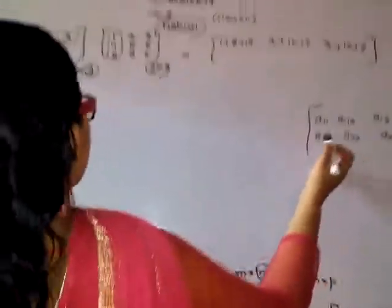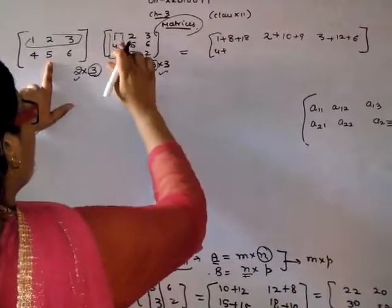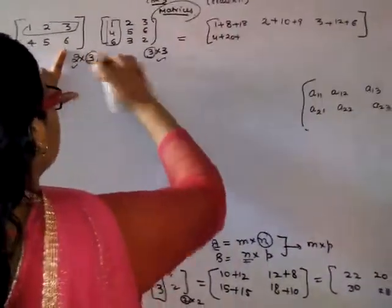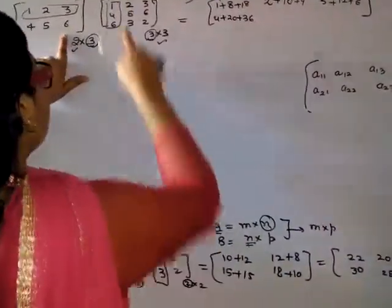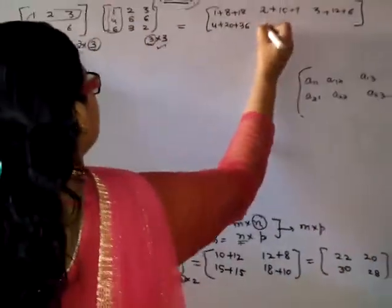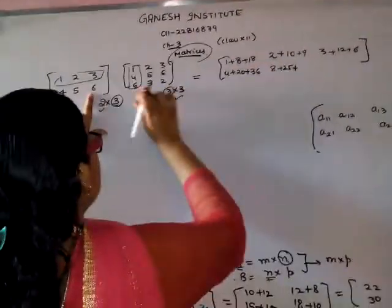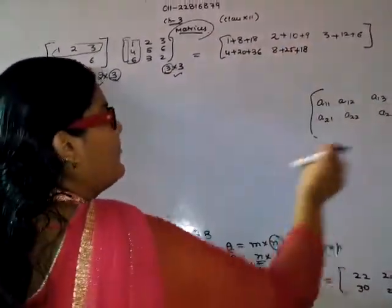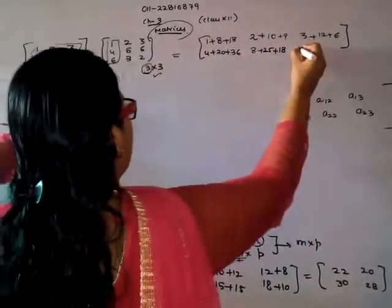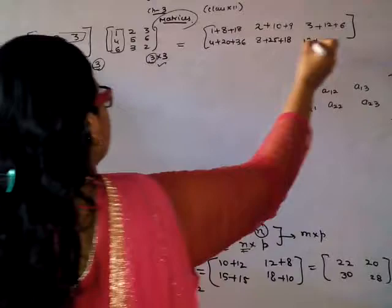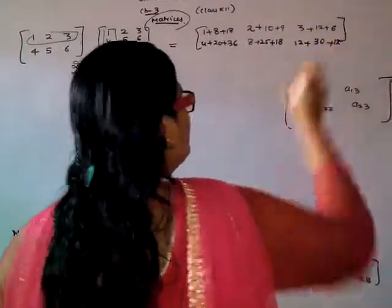Next, second row first column: 4 times 1 is 4, 5 times 4 is 20, 6 times 6 is 36. Second row second column: 4 times 2 is 8, 5 times 5 is 25, 6 times 3 is 18. Now second row third column: 4 times 3 is 12, 6 times 5 is 30, and 6 times 2 is 12.